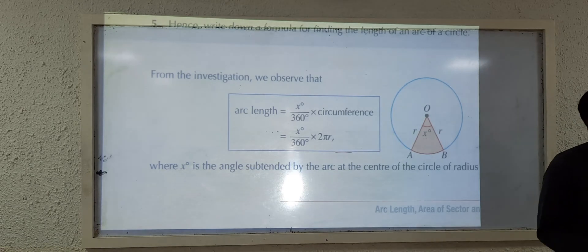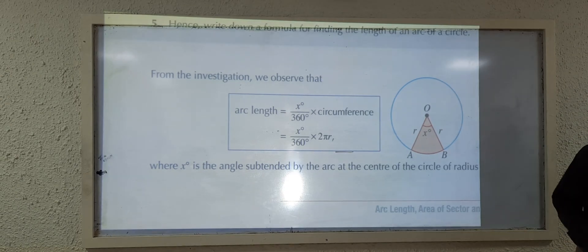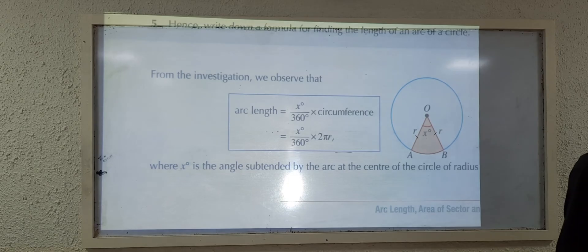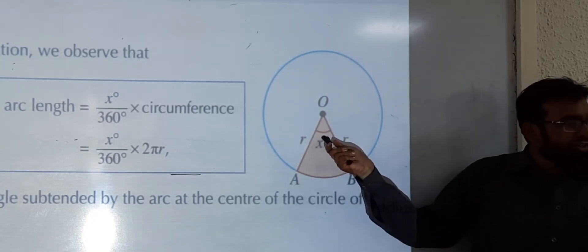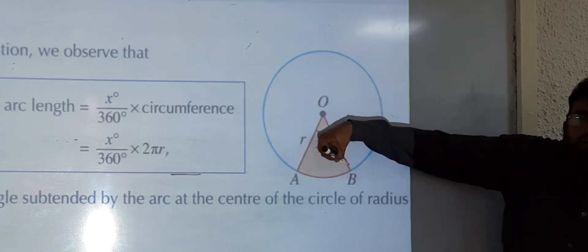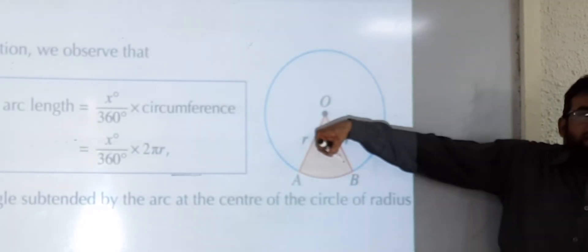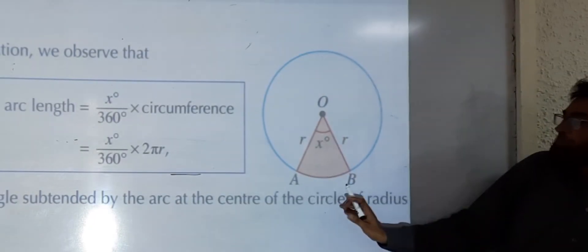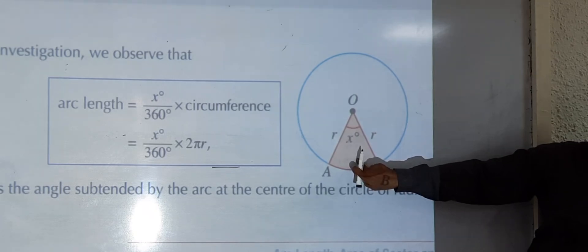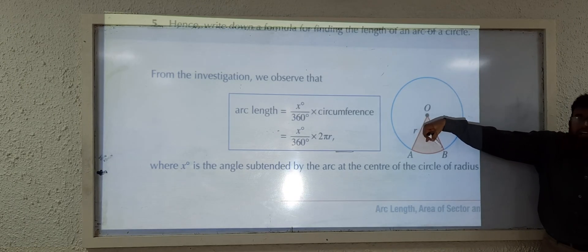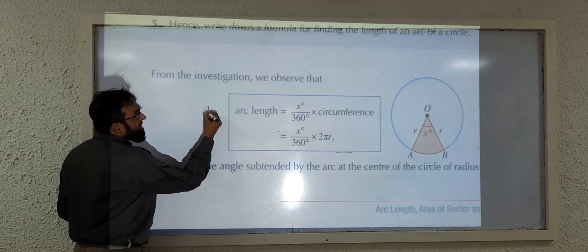This is the angle suspended by the two radii of the circle. Both radii are equal. Angle x is the angle these two radii make with each other. AB is the minor arc, and the region AOB shown in pink is the minor sector. Now if we are going to find out this arc length, the formula for arc length is as follows.